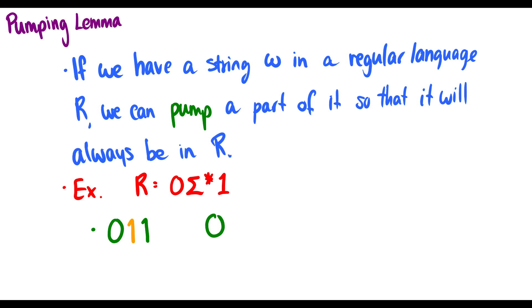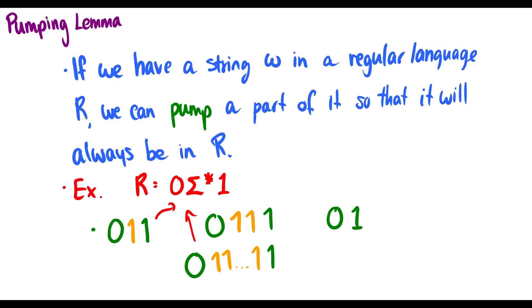So we have zero one one, and we can pump the one up so there's an additional one — zero one one one. We can also pump things down, so we're just left with zero one. We can pump these things up an infinite number of times, producing a string with many ones followed by a final one, and this is still going to be in this regular language. So if this is true for anything we choose to pump, it's still going to be in the regular language.